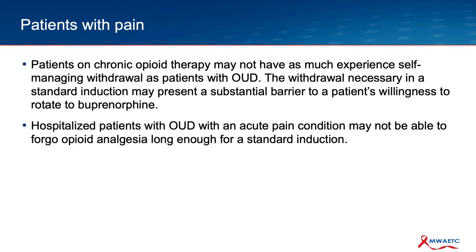Patients with pain — those maintained on opioid analgesics for chronic pain for a long time — may have less experience self-managing withdrawal symptoms compared to patients with opioid use disorder, and may have real fears and anxieties around experiencing withdrawal. This could be a pretty substantial barrier to rotating to buprenorphine for safety reasons. Likewise, patients who are hospitalized with acute pain may find it a tough sell to go 8 to 12 hours without an opioid analgesic when they still need medications for acute pain.